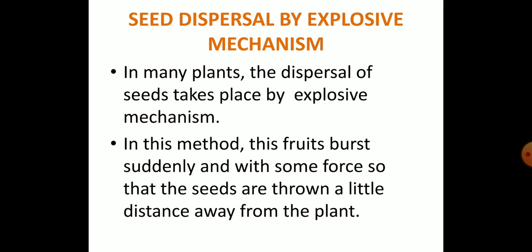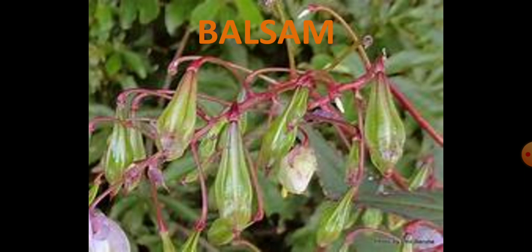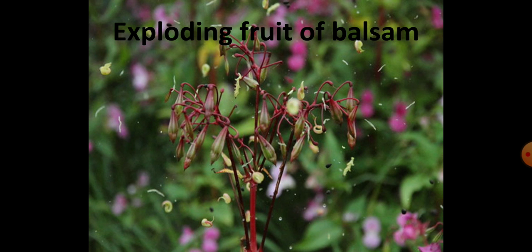Now, seed dispersal by explosive mechanism. In many plants the dispersal of the seed takes place by explosive mechanism. In this method the fruit bursts suddenly and with some force so that the seeds are thrown a little distance away from the plant. For example, in balsam, a mere touch causes the fruit to explode suddenly and the seeds are thrown out with great force.